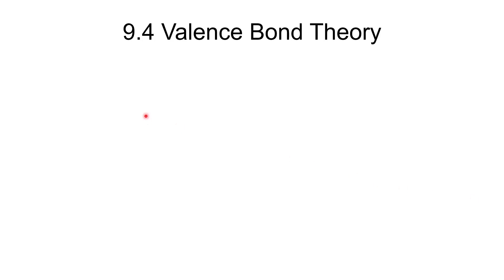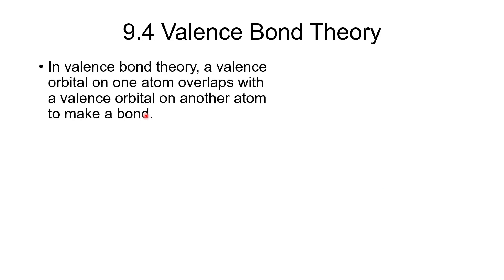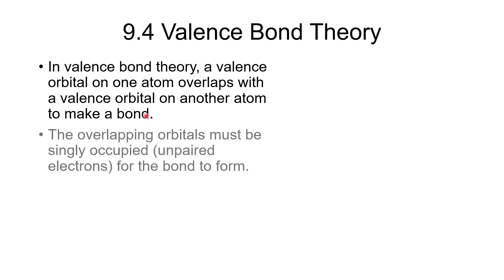In chapter 9, section 4, we want to look at valence bond theory. In valence bond theory, a valence orbital on one atom overlaps with a valence orbital on another atom to make a bond. The overlapping orbitals must be singly occupied, so they must each have one unpaired electron for the bond to form.